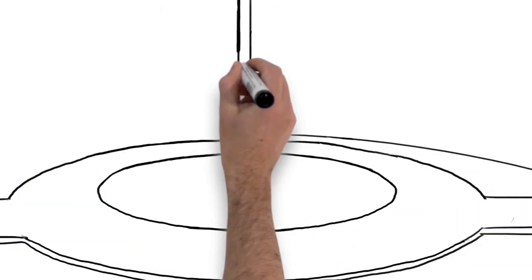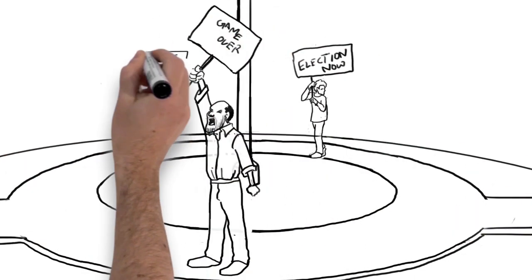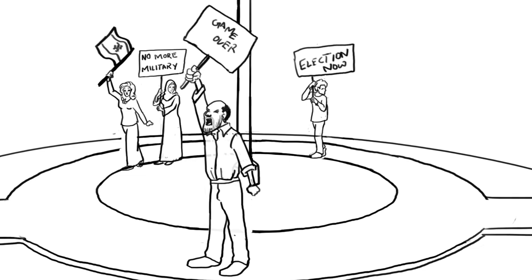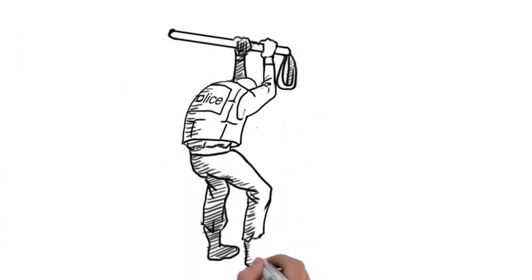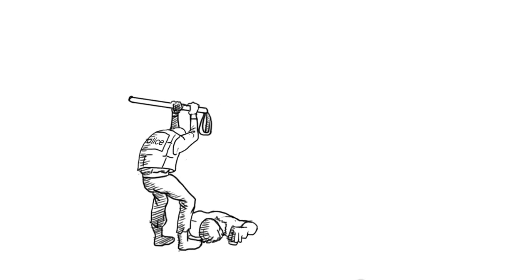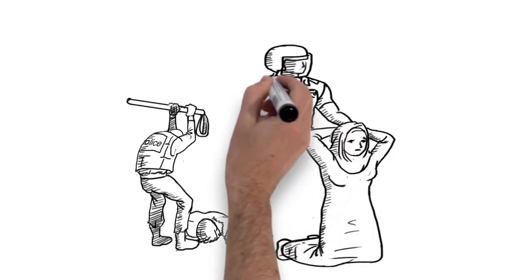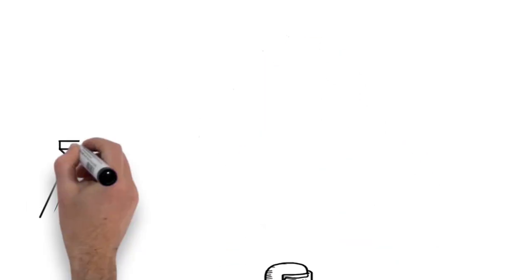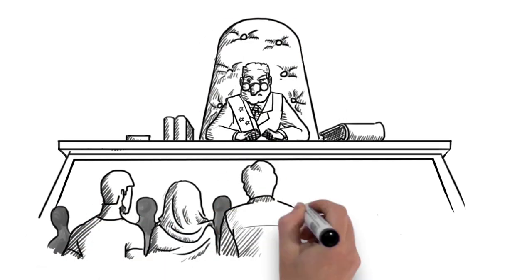But a month later, Egyptians returned to Tahrir Square, demanding a quicker transition to a democratically elected government. The army and military cleared out Tahrir Square, detained and tortured over 150 protesters, who were tried and convicted in military courts.